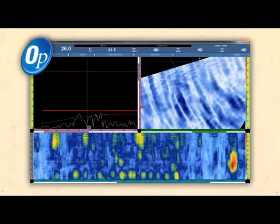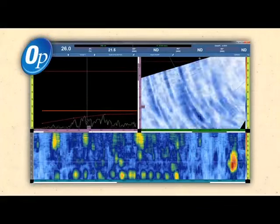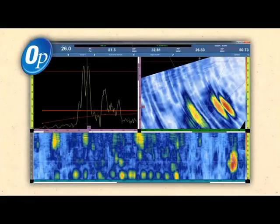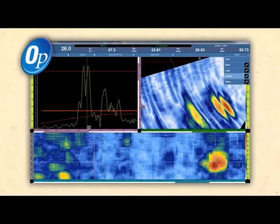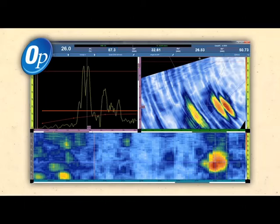OmniPC allows OmniScan data to be analyzed on a computer with the same software interface as the instrument. In this example, a 2 MHz A17 DMA probe detects ID-connected thermal fatigue cracking in the heat-affected zone of an Inconel weld and base material.